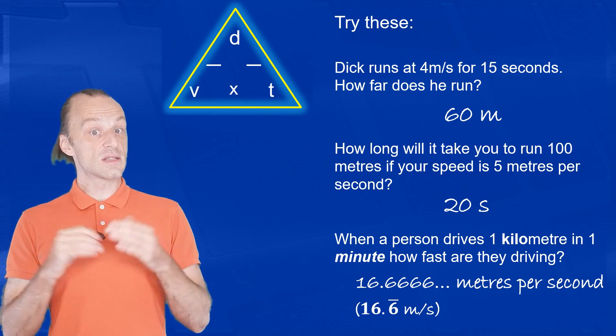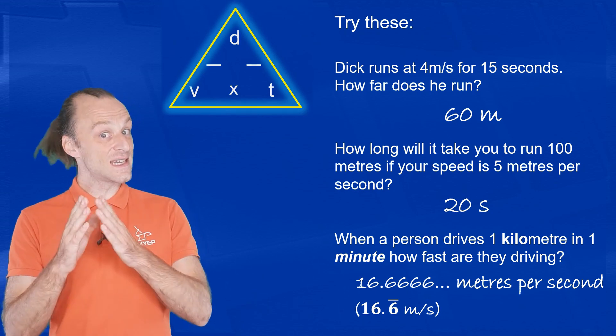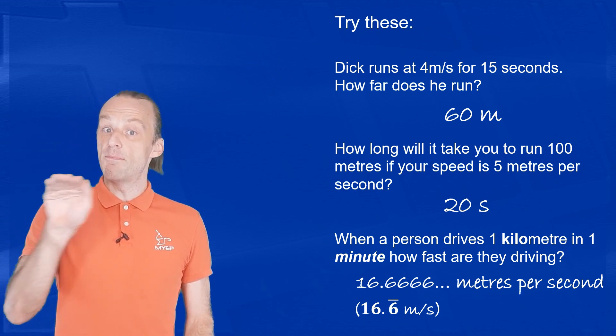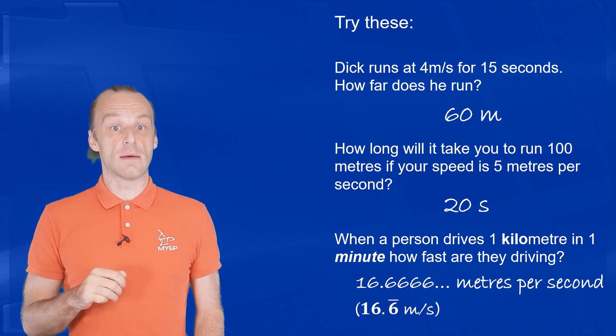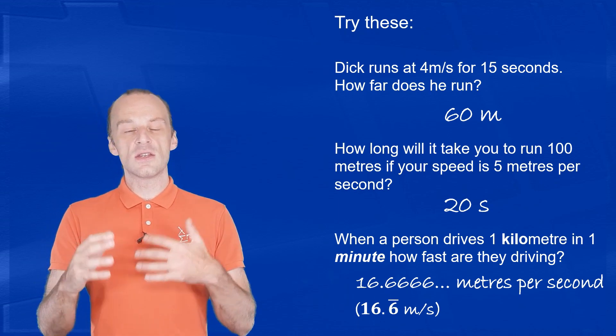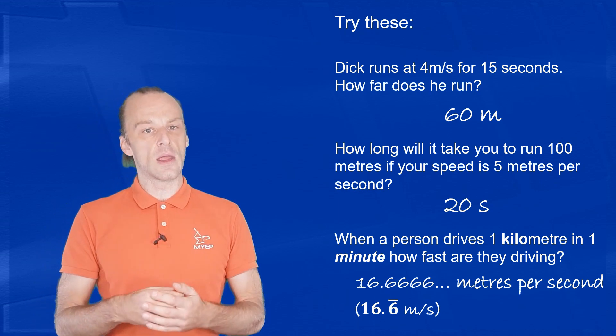This last answer is a recurring decimal. The sixes go on forever. We write this by putting a bar or a dot over the numbers that repeat. You can see in these examples that there's already quite a lot going on here.